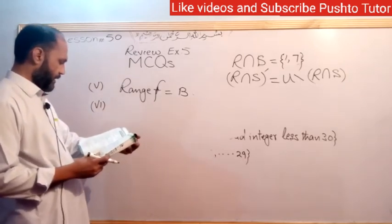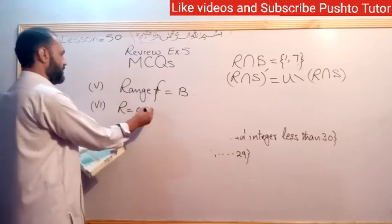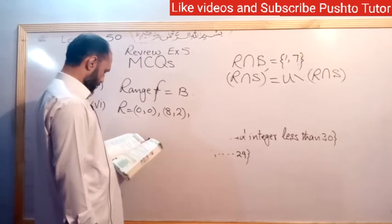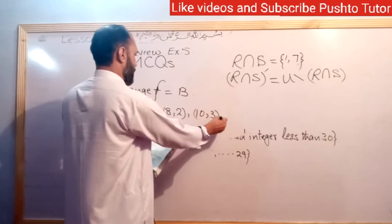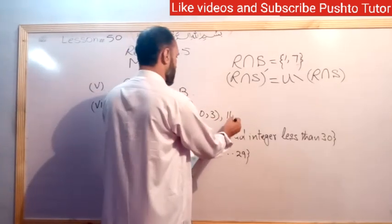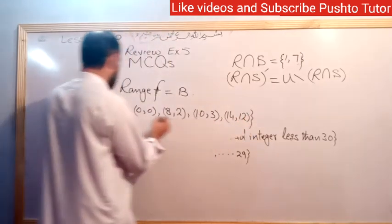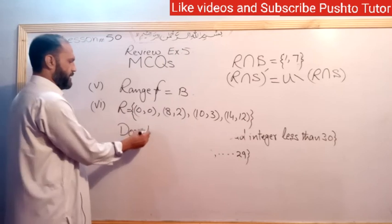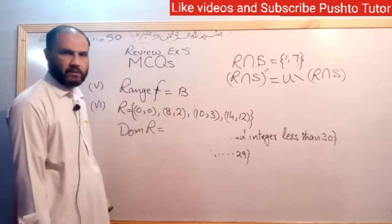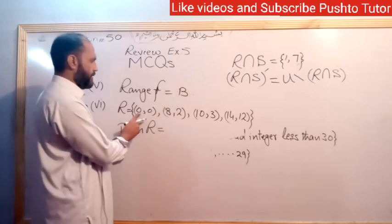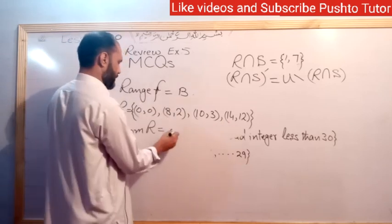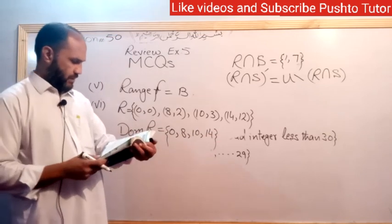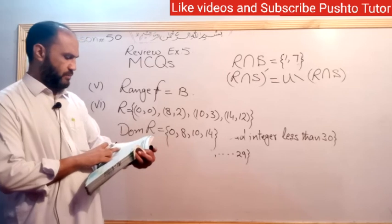Question 7: If R equals the relation (0,0), (8,2), (10,3), (14,12), find the domain of relation R. The domain consists of the first elements from the ordered pairs: 0, 8, 10, 14. First option is the answer.